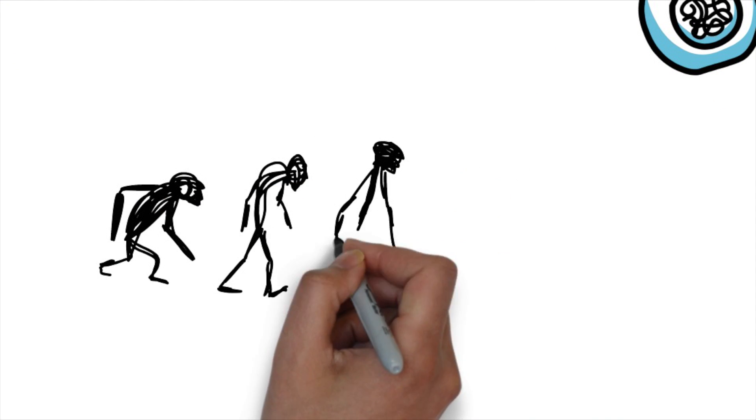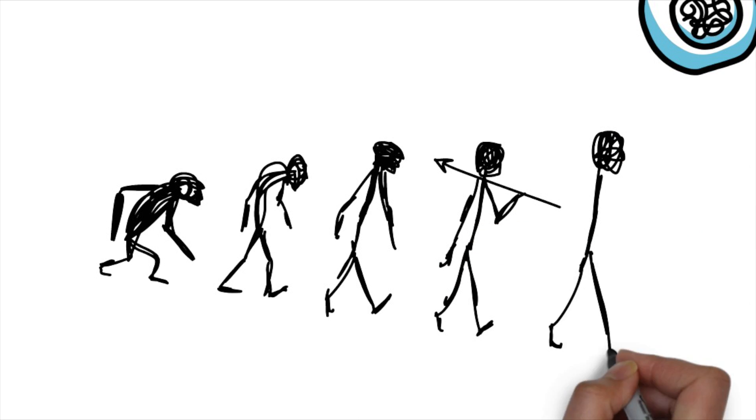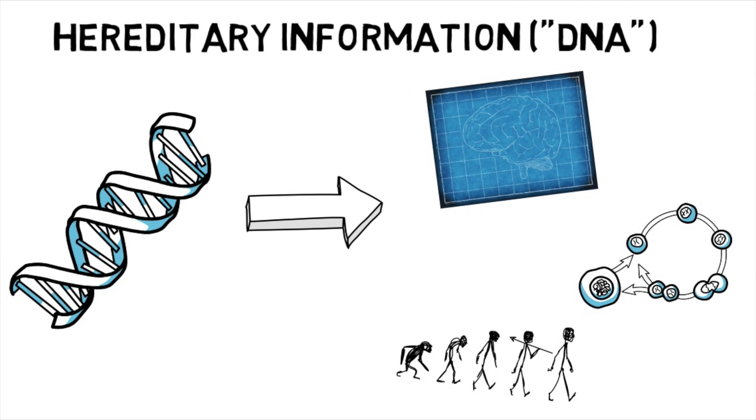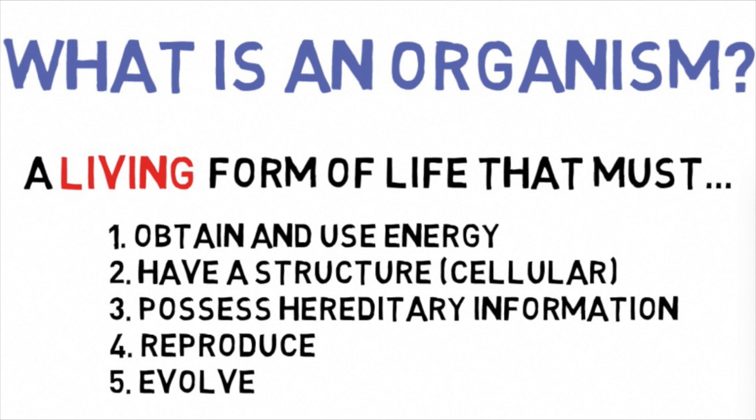The last one, number four, is reproduction—simply being able to reproduce, have offspring, to pass on your hereditary information, and of course, as a species, survive and thrive in our environment.